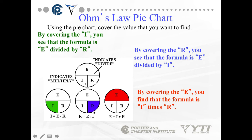If you want to find R, cover the R and you see E over I, so it's voltage divided by amperage. If you want to find voltage and you have current (amperage) and resistance, you take I times R and that's your voltage. This is how I would recommend you remember Ohm's Law — if you can draw the pie chart from memory, you can find every single value you need relatively easily.